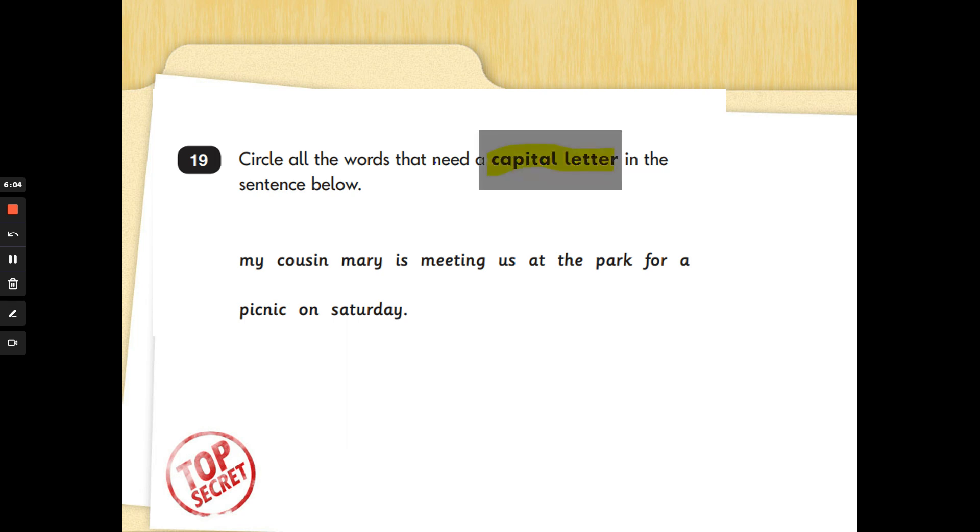Last question for today. Circle all the words that need a capital letter in the sentence below. When do we use a capital letter? At the beginning of a sentence. Yes. And also for names. Do you remember that proper nouns? When you write your name, you start with a capital letter. But we also need a capital letter for the names of places, towns, special events, days, months of the year. So are you ready to listen and see if you can help Mrs. G? My cousin Mary is meeting us at the park for a picnic on Saturday. My cousin Mary is meeting us at the park for a picnic on Saturday. Always start at the beginning of the sentence. And there you go. They forgot the capital letter there.